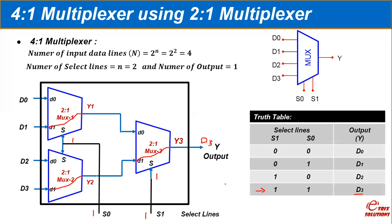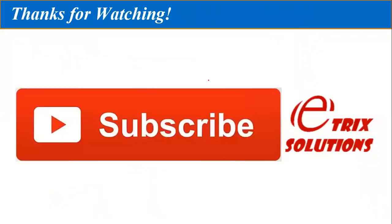In this way you can verify this multiplexer tree. Three 2x1 multiplexers are required to implement a 4x1 multiplexer. This is all about the designing of the multiplexer tree. I hope you are very well acquainted with the multiplexer tree designing. Thank you for watching this video and see you in the next video.